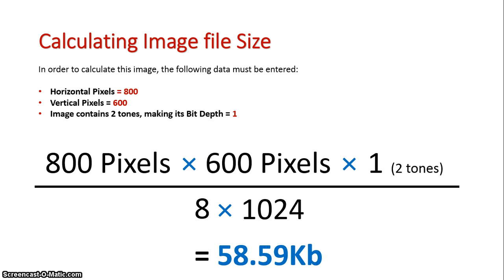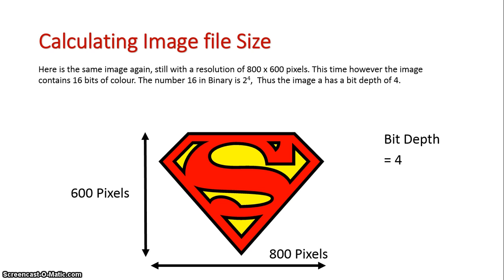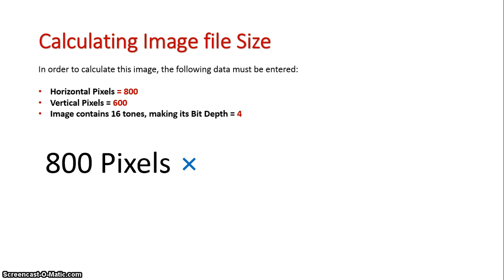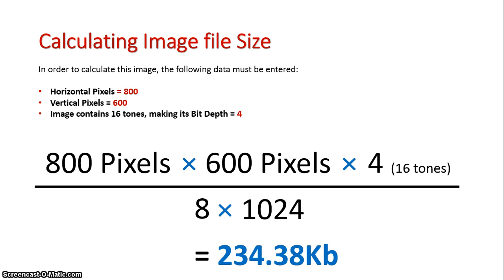Now let's look at the same image again, this time with a bit depth of 4. 2 to the power of 4 in binary is 16, so it has 16 colors. Just understand that conversion method when figuring out bit depth. We'll do our formula again: 800 by 600, this time by 4 for our 16 tones of color, divided by 8 times 1024, and that equals 234.38 kilobytes. Notice how the different number of colors greatly increases the file size of an image.